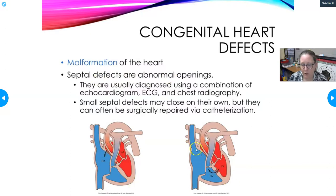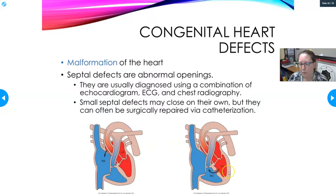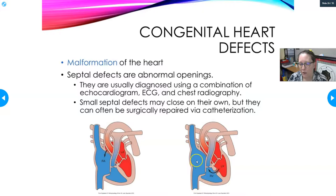Septal defects are abnormal openings in the septum — the wall separating the right and left sides of the heart, which should be completely intact. A hole between the two atria is an atrial septal defect (ASD); a hole between the ventricles is a ventricular septal defect (VSD). In either case, oxygenated and unoxygenated blood can mix, which is very inefficient. Oxygenated blood may recirculate to the lungs instead of going to the body, and unoxygenated blood may bypass the lungs entirely.